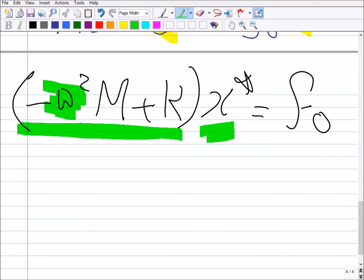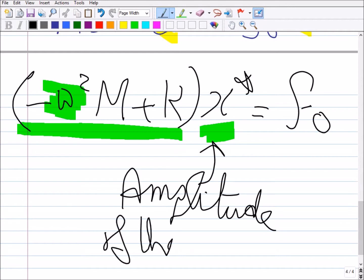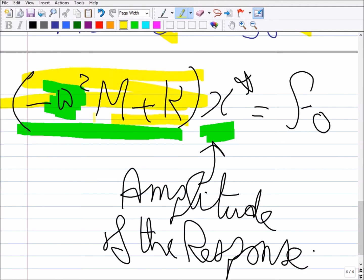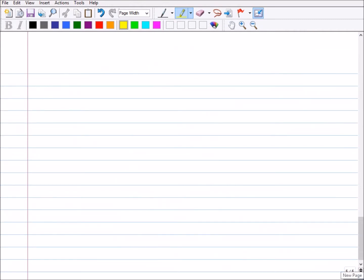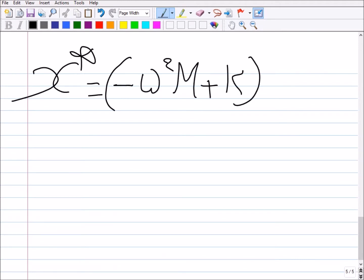Right, amplitude of the response. So this is an unknown value. All what you need to do is invert the matrix, invert this, okay, multiply it by F, and you'll get the amplitude response here. So x* will be (-ω²M + K)⁻¹ times F₀. This is an algebraic relation.